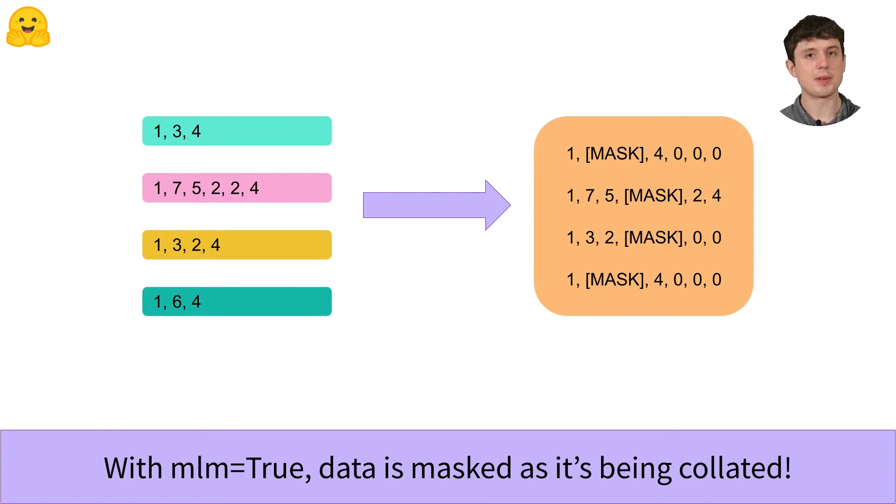So recall that in masked language modeling the model is not predicting the next word. Instead we randomly mask out some tokens and the model predicts all of them at once. It tries to fill in the blanks for those masked tokens.